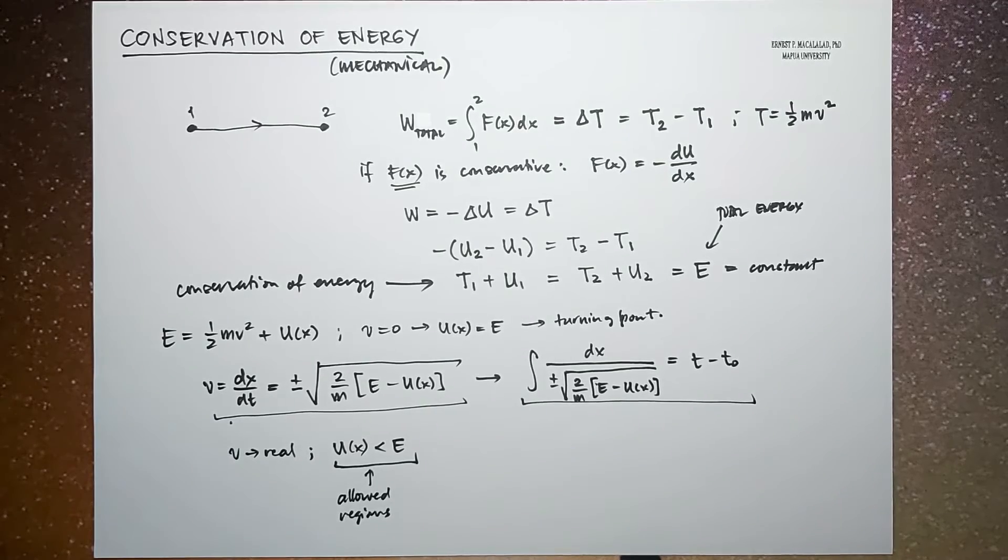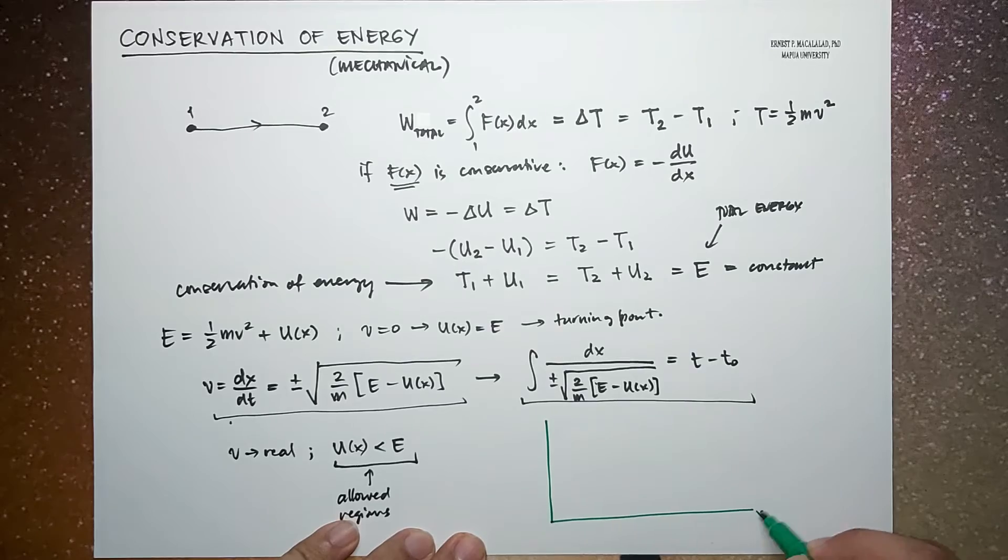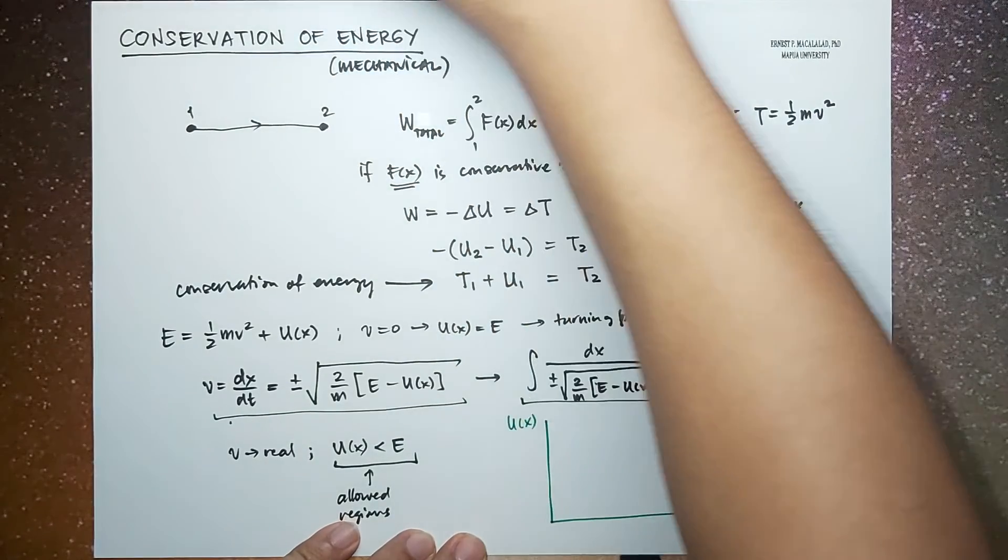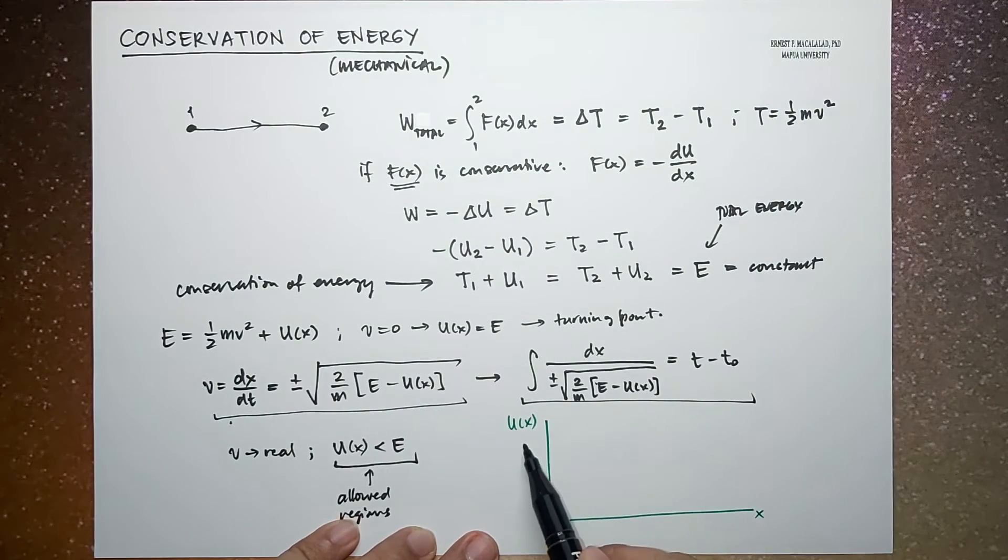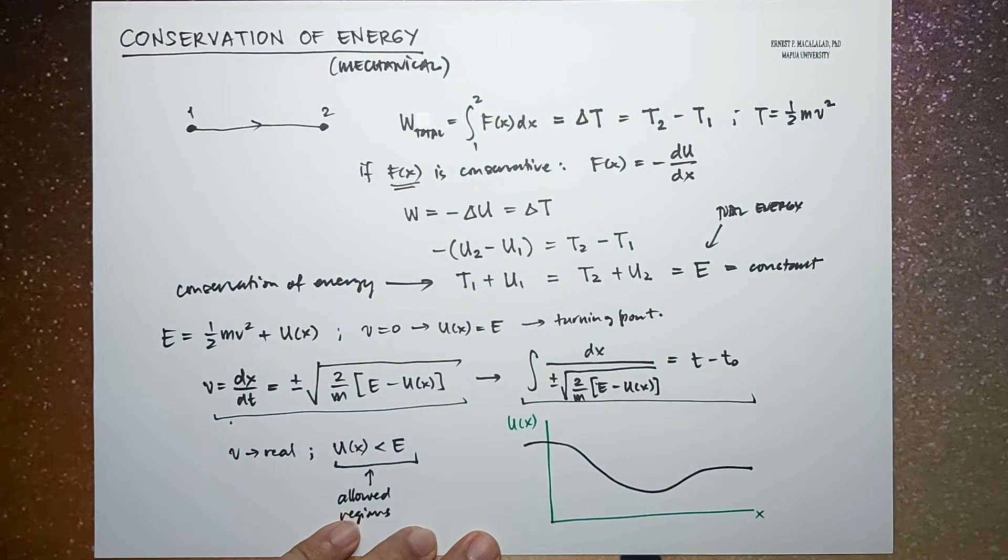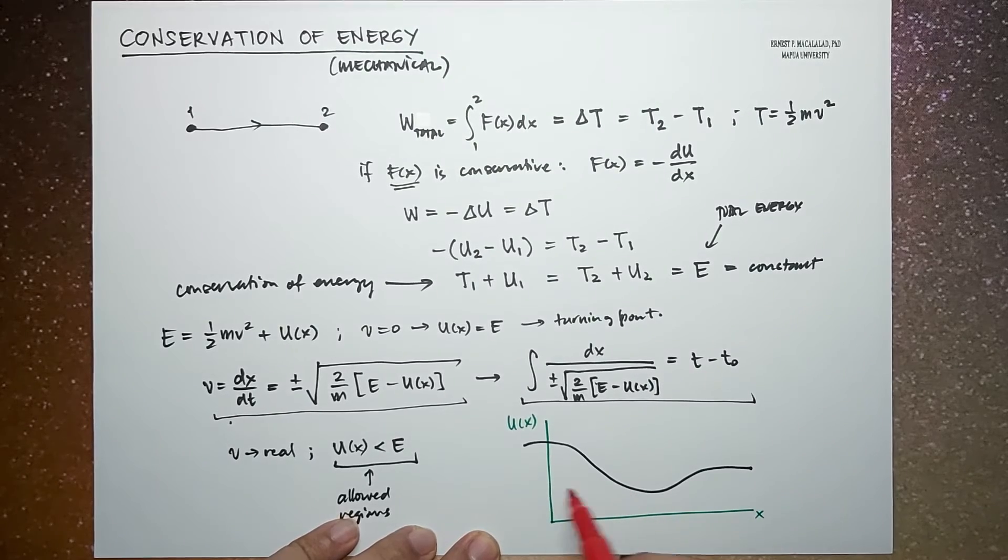So let's illustrate this by using this simple graphical representation. For example, we have your potential energy curve. So if you have your potential energy curve, and let's say the curve is defined like this, and let's say the energy of a particle—remember, this is a field—so let's say a particle only has this amount of energy.